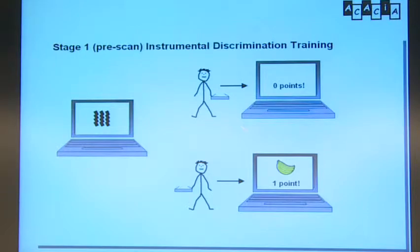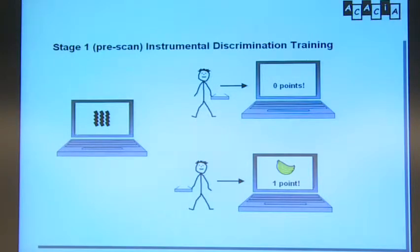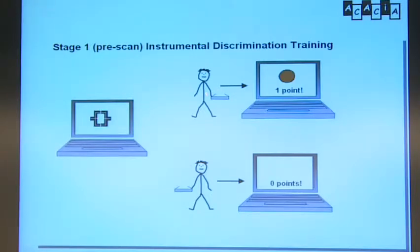The idea is that we have a symbol on the screen — this is done outside the scanner before any scanning. The person learns that if they see this symbol and press the left lever, they don't get any reward, but if they press this lever, they get a symbolic reward and score a point. They see another symbol, and here they discover they have to press the left key to get their reward; if they press right, they don't get it. It's a simple instrumental learning task.